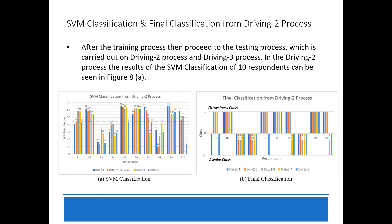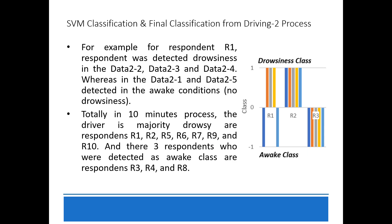These are the SVM classification results. After the training process, testing was carried out on driving 2 and driving 3 processes. In driving 2 process, the SVM classification results for 10 respondents can be seen in figures A and B. For example, respondent R1 was detected as drowsy in data segments 22, 23, and 24, while in data 21 and data 25 they were detected in an awake condition. In total over the 10-minute process, the majority drowsy respondents were R1, R2, R5, R6, R7, R9, and R10.